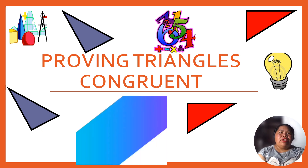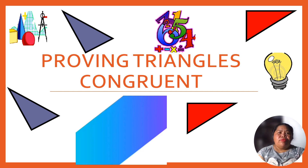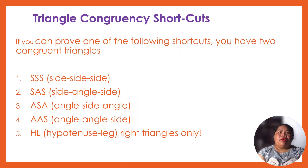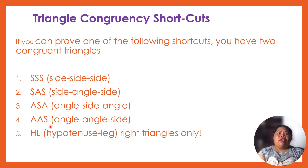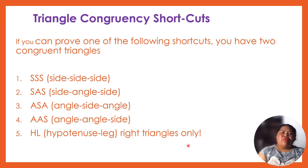Our lesson for today is proving triangles congruent. We have triangle congruency shortcuts. So if you can prove one of the following shortcuts, you have two congruent triangles. We have SSS or side-side-side, SAS or side-angle-side, ASA or angle-side-angle, AAS or angle-angle-side, and then HL or hypotenuse-leg — for right triangles only.